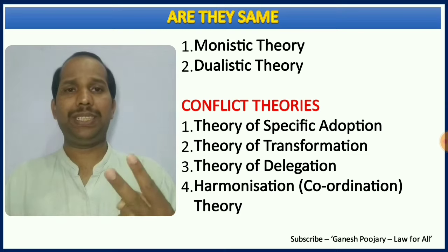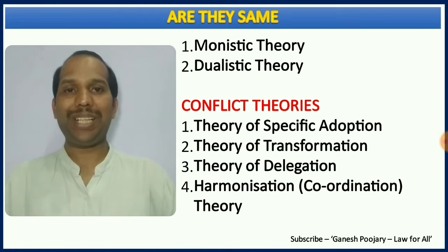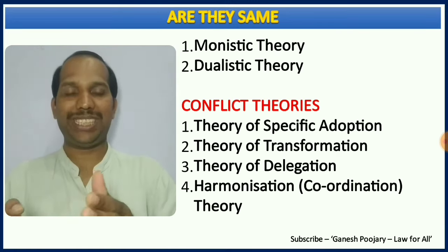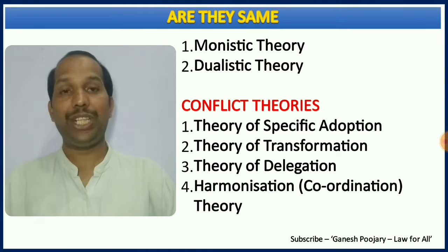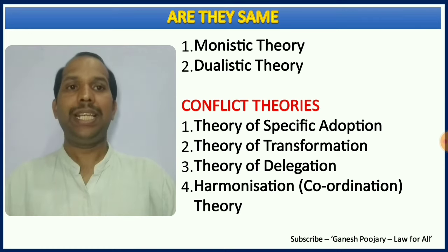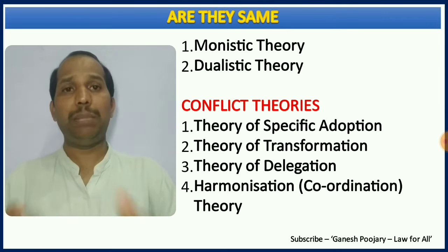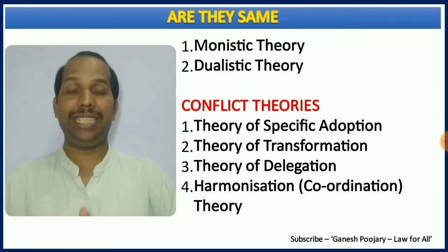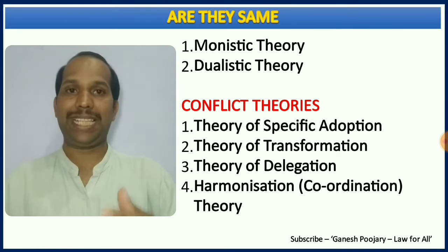There are two predominant theories: one says international law and municipal law are the same — that is the monistic theory — and the other says they are not the same — that is the dualistic theory. Beyond these, there are four important conflict theories: the theory of specific adoption, theory of transformation, theory of delegation, and theory of harmonization or coordination. This video covers only monistic and dualistic theory; the conflict theories will be discussed in the next video.